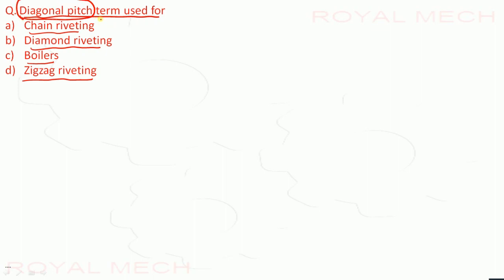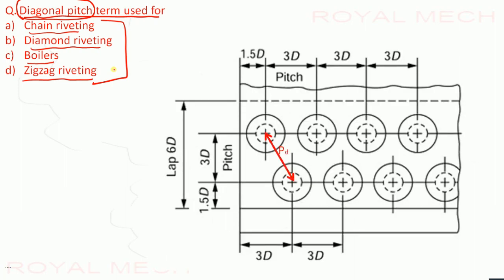Diagonal pitch is a term used for: chain riveting; diamond riveting; boilers; or zigzag riveting. The diagonal pitch PD is used in zigzag riveting. Therefore option D is the correct option.